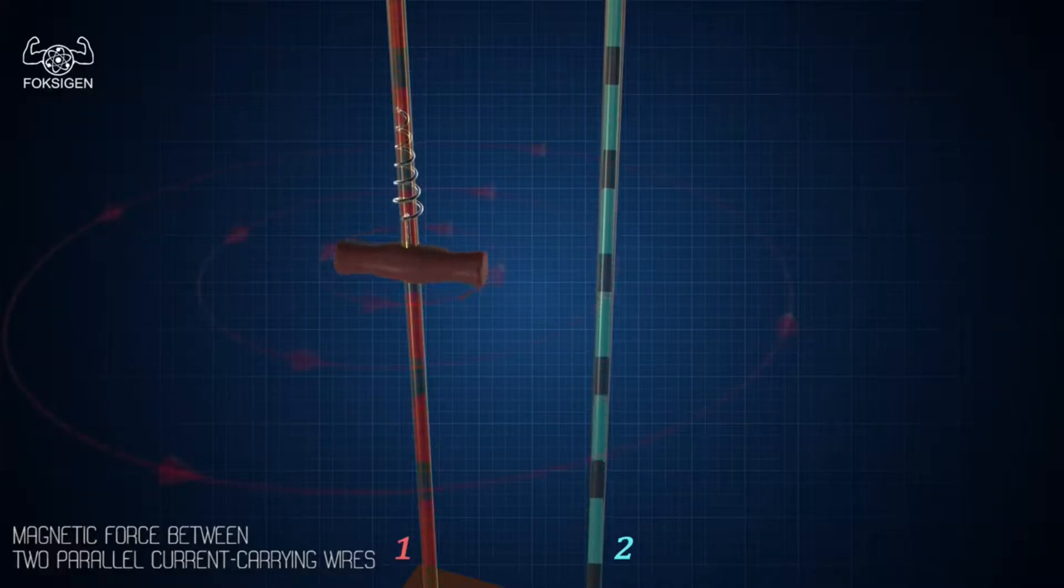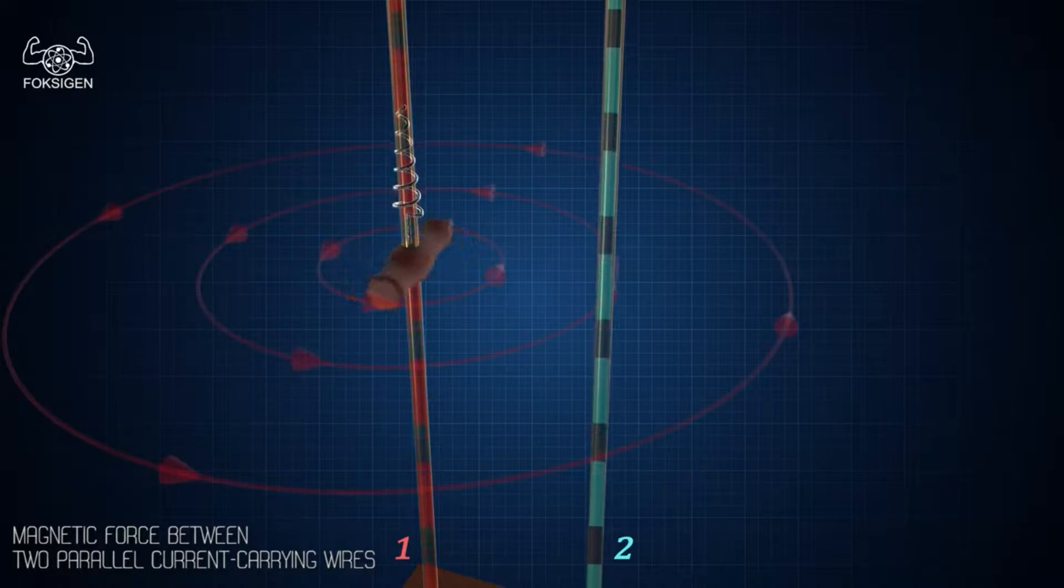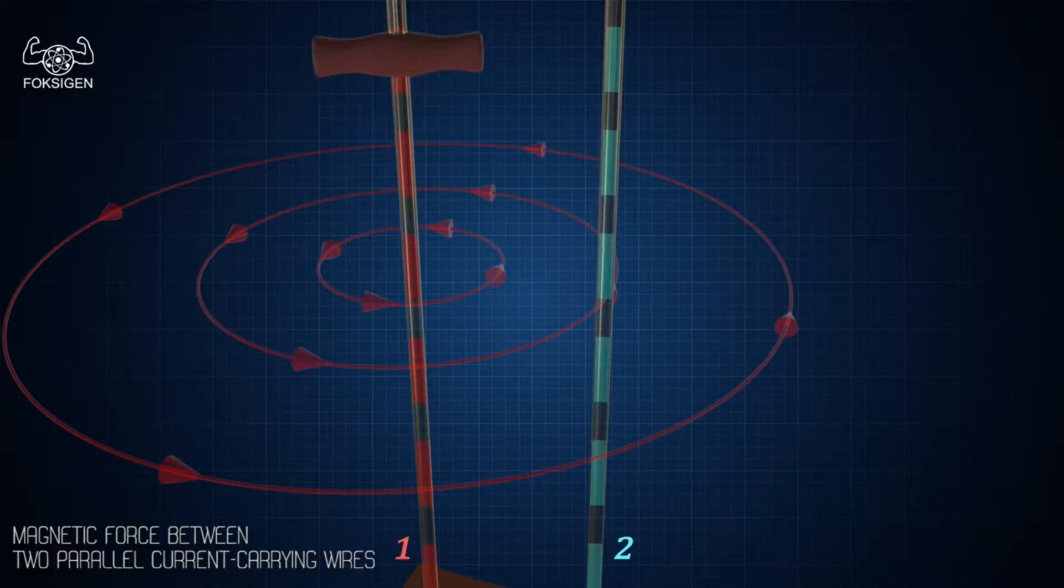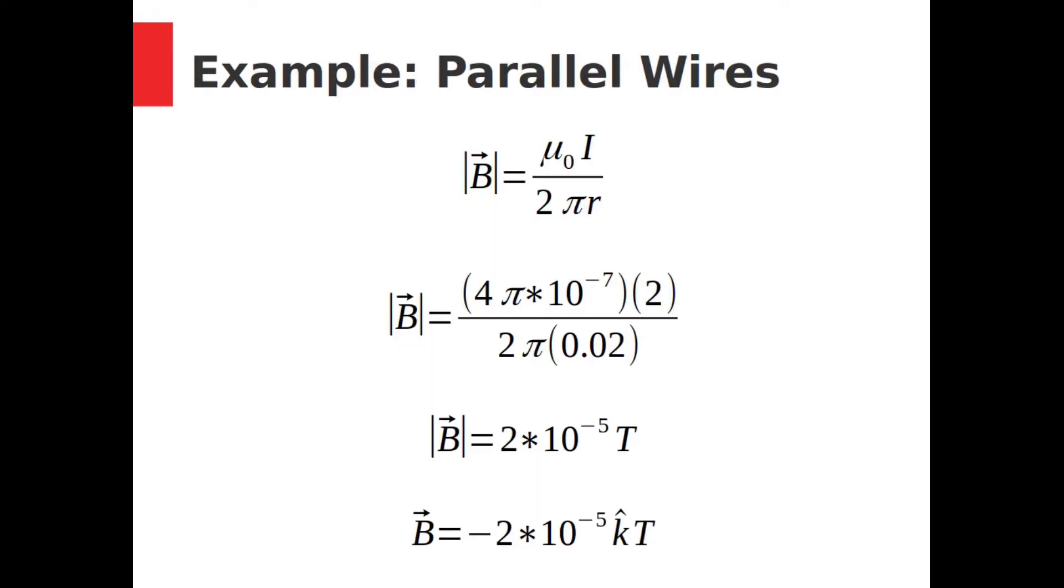Next, the direction of the field. Using the second right-hand rule, the one for currents creating magnetic fields. Place your right thumb along the left wire in the direction of the current. Curl your fingers around. That shows you the direction of the magnetic field. So, the right wire feels a field of 2 times 10 to the negative 5 Tesla, and the field is pointed in the negative z direction, into the screen. That's the magnetic field that the right wire experiences.